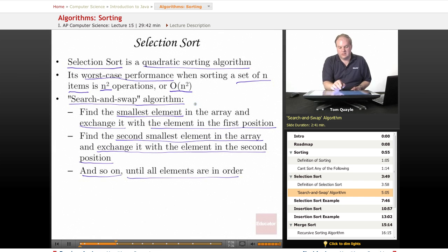Since it takes n comparisons to find the smallest element in an array of n elements, and we then have to move each of those n elements, that's where the n squared performance comes from.